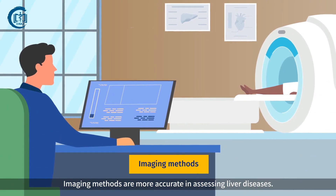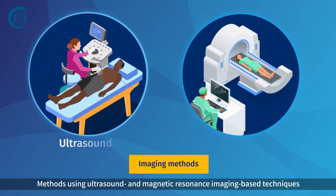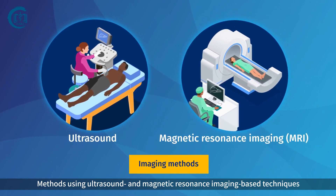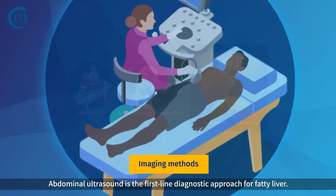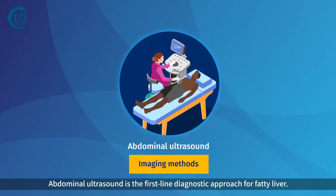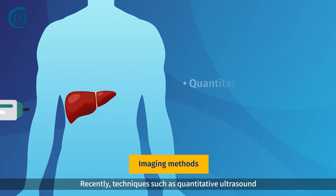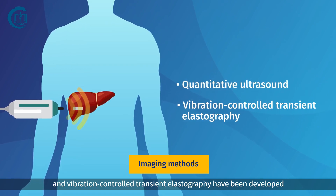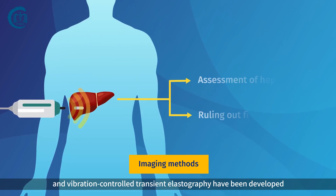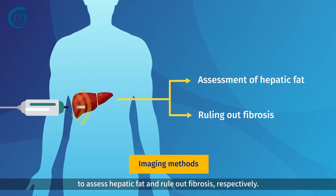Imaging methods are more accurate in assessing liver diseases. Methods using ultrasound and magnetic resonance imaging-based techniques can detect and measure disease severity with high accuracy. Abdominal ultrasound is the first-line diagnostic approach for fatty liver. Recently, techniques such as quantitative ultrasound and vibration-controlled transient elastography have been developed to assess hepatic fat and rule out fibrosis, respectively.